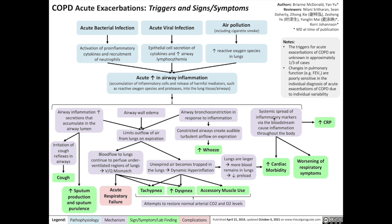Finally, the systemic spread of inflammatory markers via the bloodstream causes inflammation throughout the body, worsening cardiac consequences, worsening respiratory symptoms, and leading to increased CRP — C-reactive protein — a measure of inflammation in the body. Note that the triggers for acute exacerbations of COPD are unknown in approximately a third of cases, and we do not use changes in pulmonary function to diagnose patients with exacerbations of COPD.